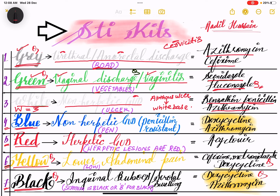The blue kit is also used for non-herpetic genital ulcer disease, but the penicillin-resistant type. The white kit is for penicillin-sensitive non-herpetic disease, while the blue kit is for penicillin-resistant non-herpetic genital ulcer disease. Mnemonic: penicillin is mostly blue in color — so penicillin resistant means blue kit.